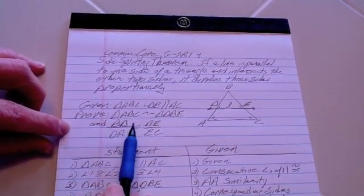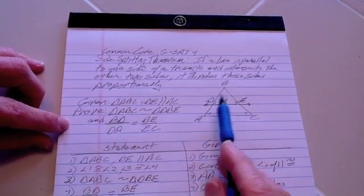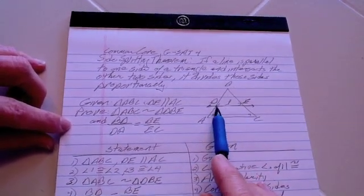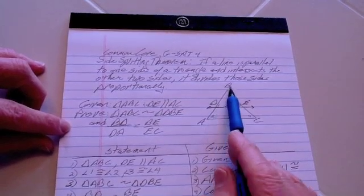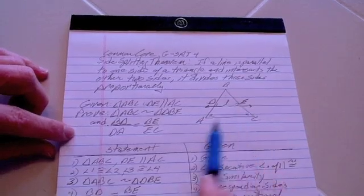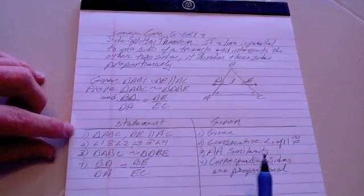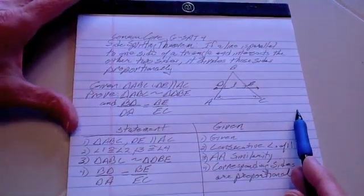And at the same time, then we want to prove that this segment right here, BD, is proportional to DA, and the same here of BE being proportional to CE. So that's our plan. That's our situation.